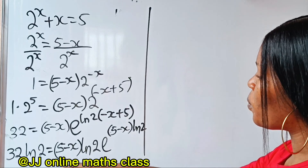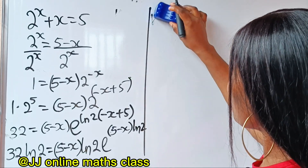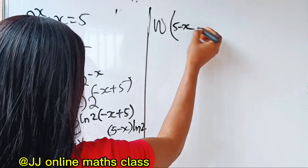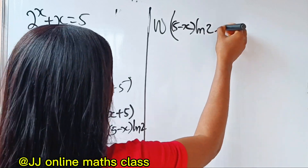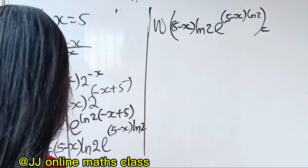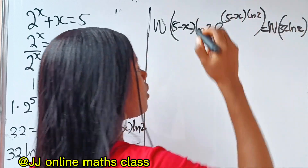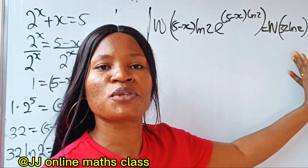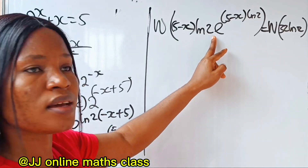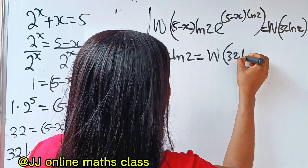We are now in a position to plug this into the W function. The W of (5 minus x)·ln2 · e^((5−x)·ln2) gives us (5 minus x)·ln2. So taking the W function of both sides: (5 minus x)·ln 2 equals W(32·ln 2).